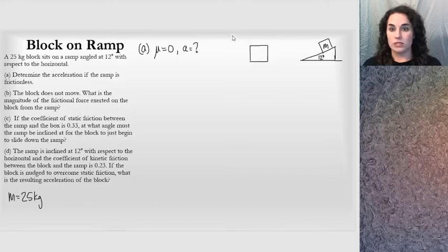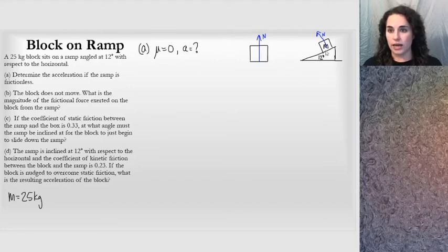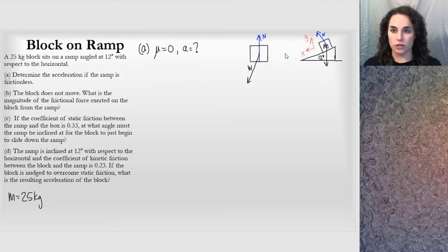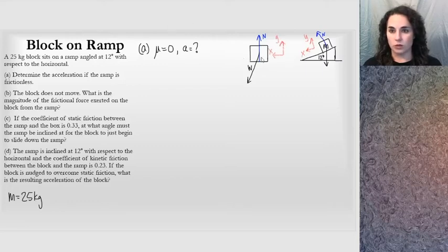The normal force will always be perpendicular away from the surface, so the normal force points upward. The weight will be pointing at an angle with respect to the normal force, so I'll draw the weight on my free body diagram. Those are actually the only two forces in this situation — the normal force and the weight. I assign a coordinate system: I anticipate the acceleration goes down the incline, so I'll make the x direction parallel to the surface of the incline, with y upward.